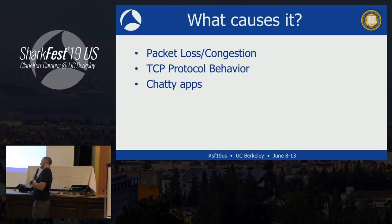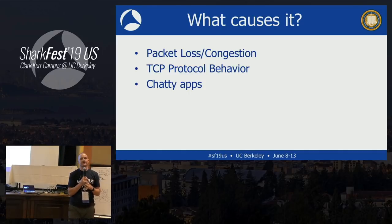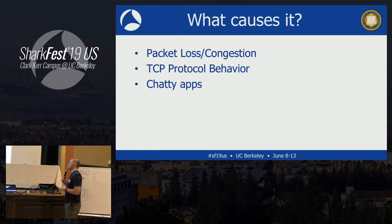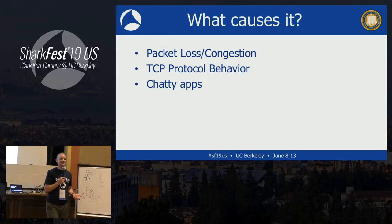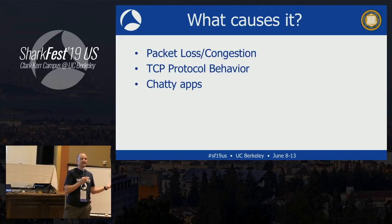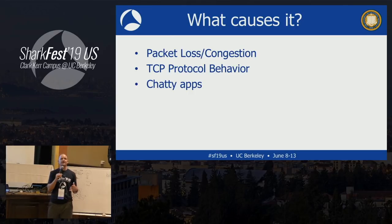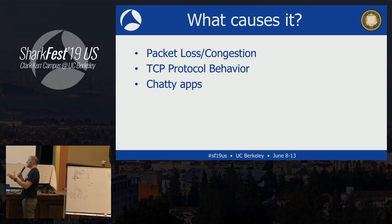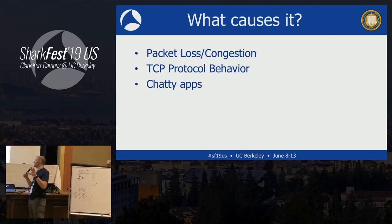There are three things that cause networks to be slow that we'll focus on today. First, packet loss or congestion - those two go hand in hand. Second, TCP protocol behavior - we'll spend significant time there. Third, toward the end if we have time, I'll show examples of chatty applications. Packet loss means literally losing packets on a link somewhere along a path. Congestion means traffic increasing on a link at a certain period affecting competing traffic.